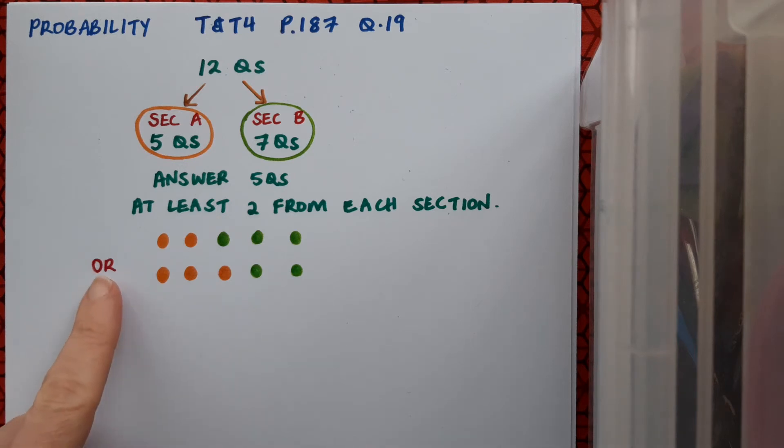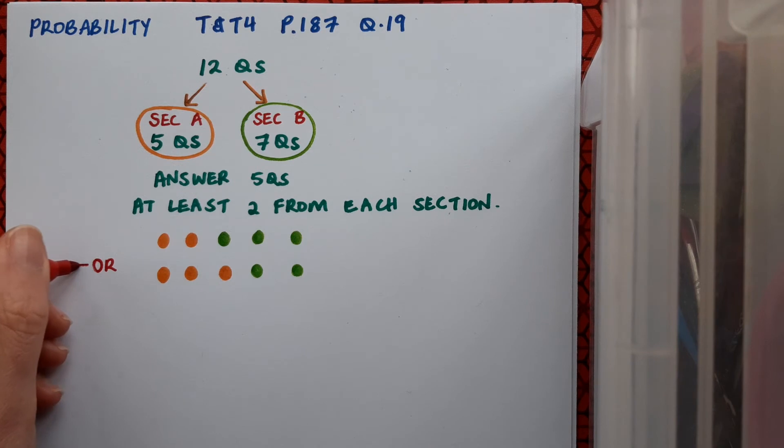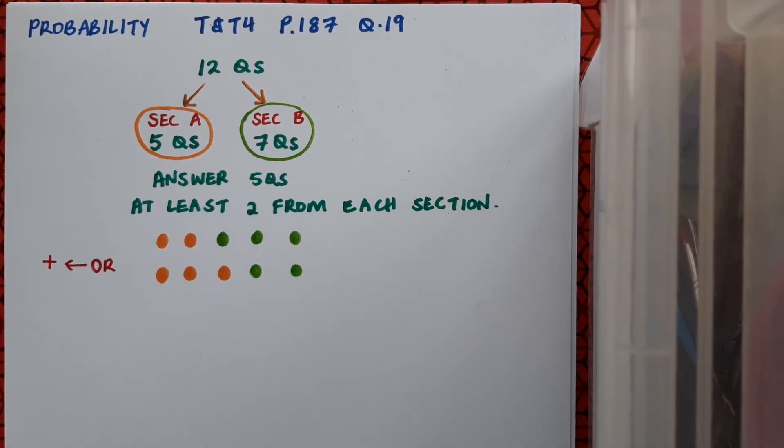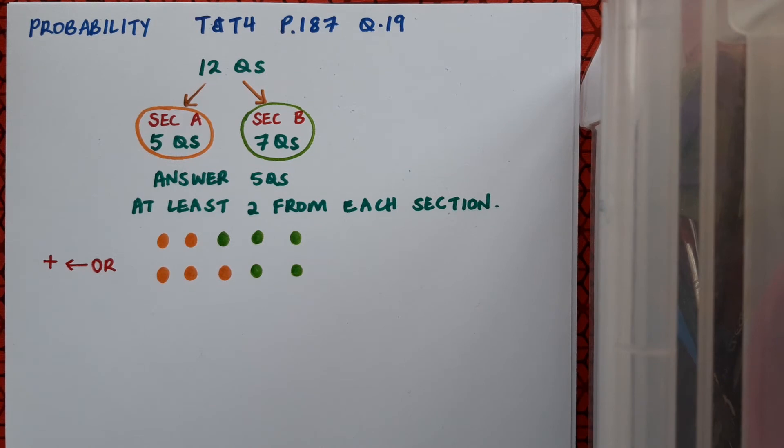Note that either of these can happen—the first or the second. When we see the word 'or' being mentioned in probability, we're thinking about the addition rule. I know this isn't strictly probability yet, but it's in the probability chapter, so we're following the same rules here.